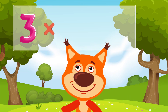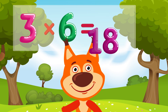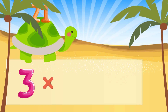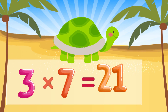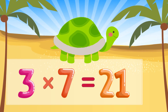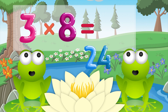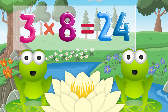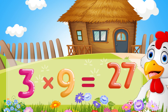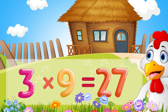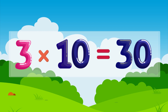Three times six is eighteen. Three times seven is twenty-one. Three times eight is twenty-four. Three times nine is twenty-seven. Three times ten is thirty.